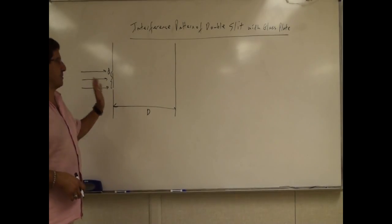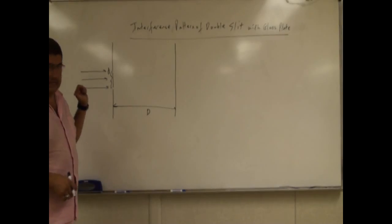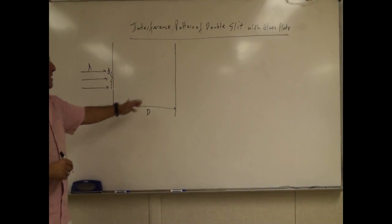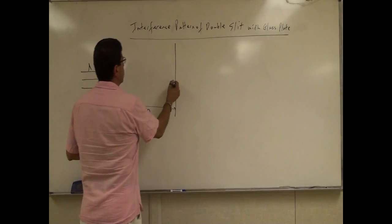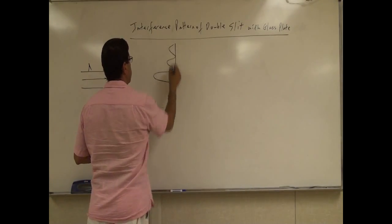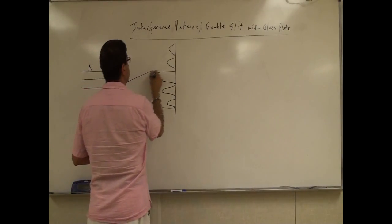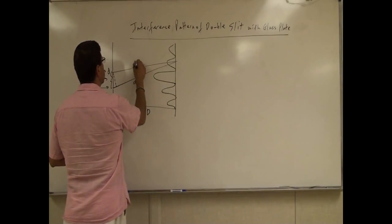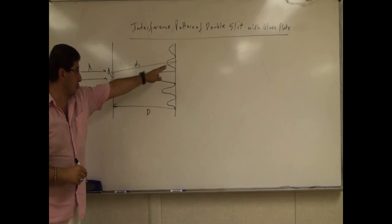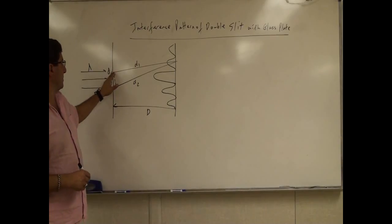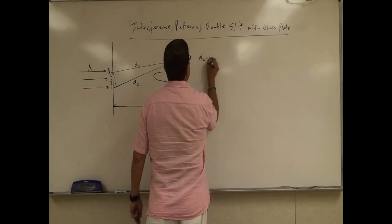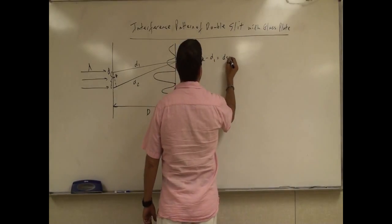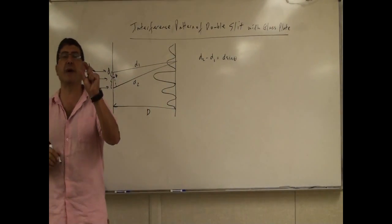The regular interference pattern is that when a beam of monochromatic light of wavelength lambda comes upon a double slit and the distance between the slits is d, it forms an interference pattern. The path length difference — if this is d2 and d1, the path length difference d2 minus d1 equals this distance d, and with angle theta, we can say it's equal to d sine theta. So this expression d sine theta represents the path difference between one ray of light and the other.